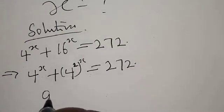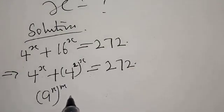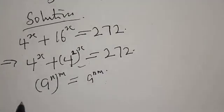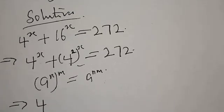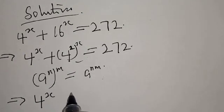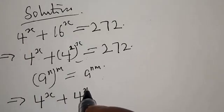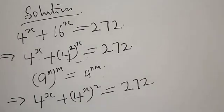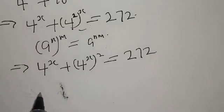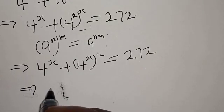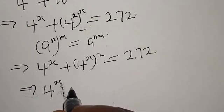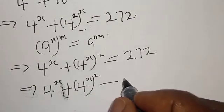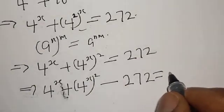Note that if you have a raised to power n raised to power m, it is the same as a raised to power nm. So this implies that 4 raised to power x plus 4 raised to power 2x is equal to 272, which gives us 4 raised to power x plus 4 raised to power 2x minus 272 equals 0.